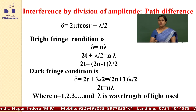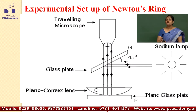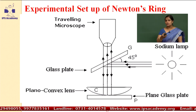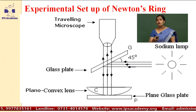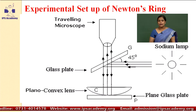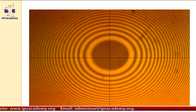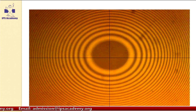At the point of contact, the value of T is 0. Hence, we observe a dark fringe at the centre, because at the point of contact of the plano-convex lens and the plain glass plate, T equals 0. Then after the centre, there is a bright fringe, then dark — alternating dark and bright fringes are observed because of constructive and destructive interference. This type of ring pattern is observed in Newton's ring experiment, and with the help of this ring pattern we find the diameter of the rings.